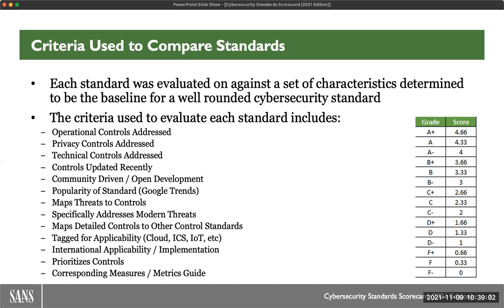We looked at Google Trends as a way to understand the popularity of given standards — it's not an exact science, but it's an interesting way to visualize interest on a subject. We also wanted to know whether the standard maps threats to controls — do we see a clear, open mapping between the threats that were evaluated and the controls that were selected? Not to spoil anything, but you'll find most standards don't do that. Very few standards actually publish that kind of mapping.